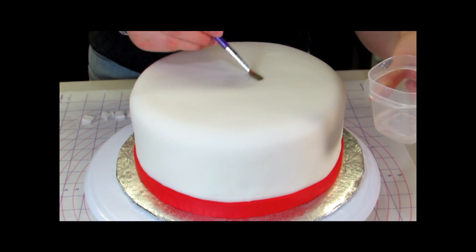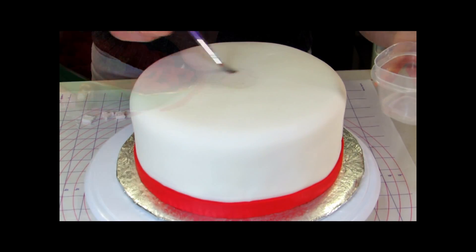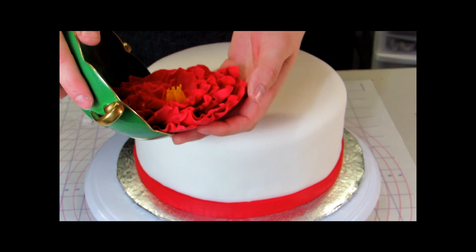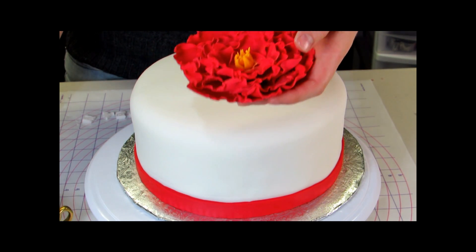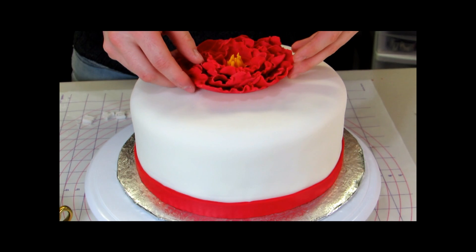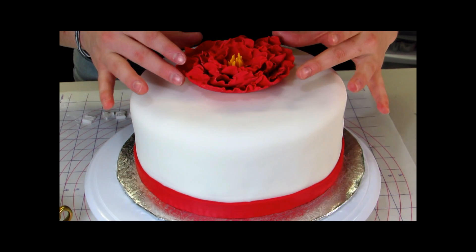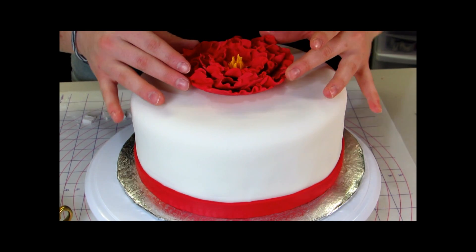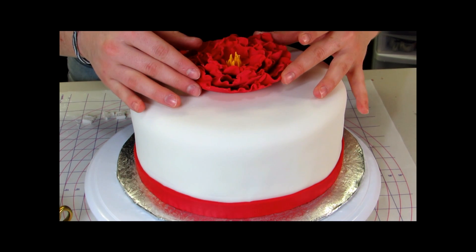Now for the fun part, place a little bit of water onto the top of the cake and then you're ready to put your flower on. Be really careful when you do this because these petals are very easily to break if you kind of hit it with your hand or anything like that. So treat it very delicately.